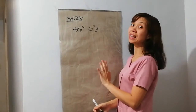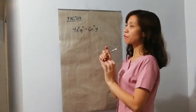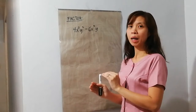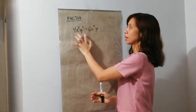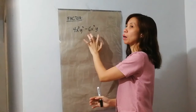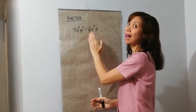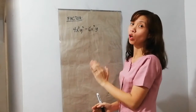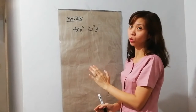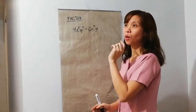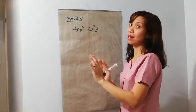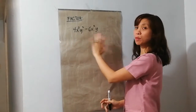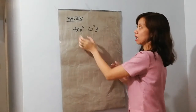Okay, so ngayon, pwede na tayo mag-factor. So, yung factor in GCMF, ang hahanapin lang natin dyan — kailangan pareho sila sa bawat terms, lahat ng terms, dapat meron silang common monomial factor. Isa lang dun ang wala, hindi na sila ang common term. So, ilang terms yun, titignan natin lahat.